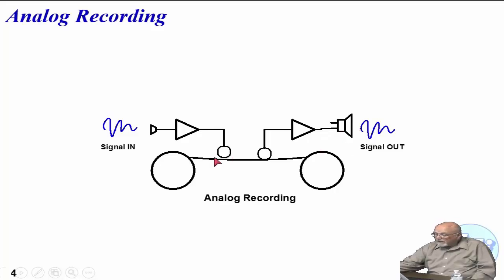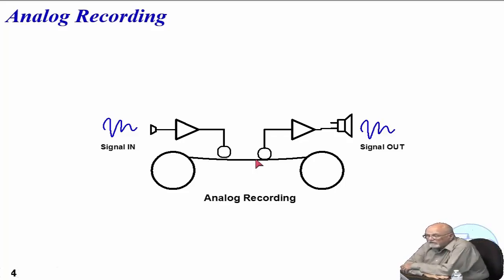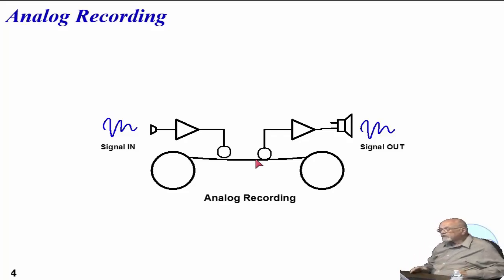Now the recording — analog recording is this way. This analog recording can be made on different media. Take a look at the original analog recorders — they actually used a little wire, not a tape recorder. And so you have an analog signal.